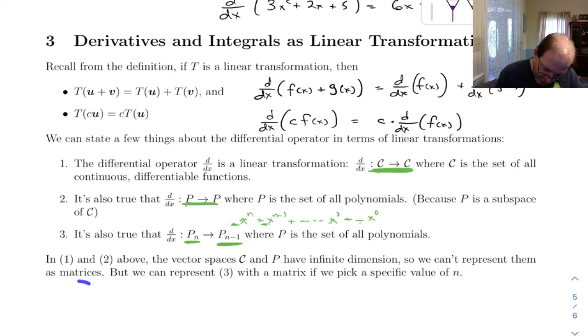So what does this say? Down here in one and two, the vector spaces are infinite dimensional, so we can't represent them as matrices. But this one down here, if we pick a specific value of n, we can represent that with a matrix and I want to just kind of write that out here.